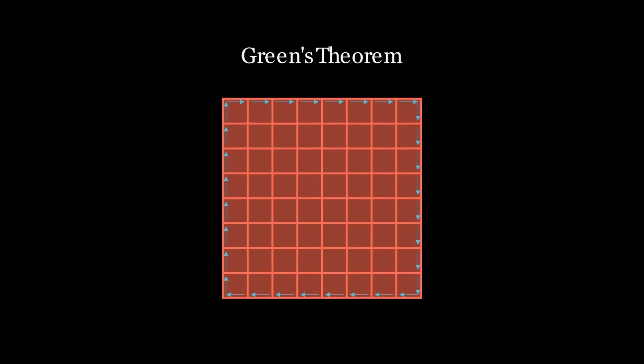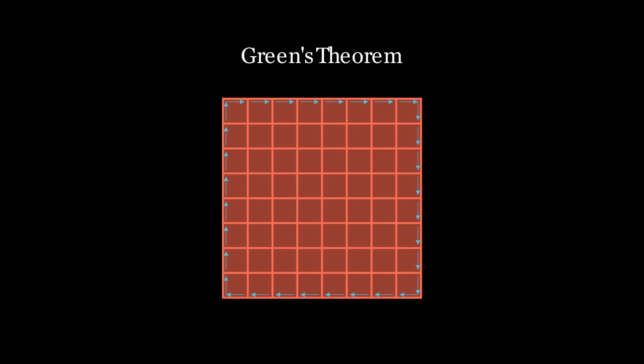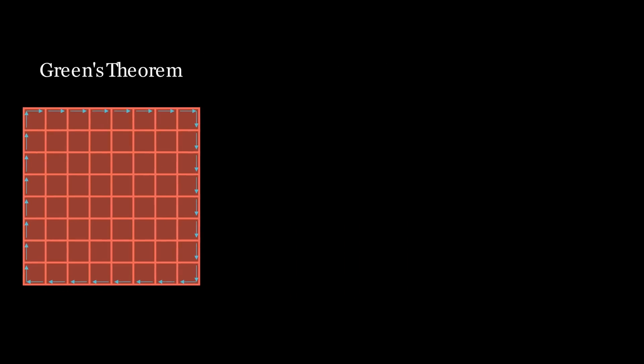This is called Green's theorem. But essentially, what we have done is just upscale the fundamental theorem of calculus to two dimensions and using curl instead of a derivative. This is written in mathematical notation like this. The left side represents the line integral, or boundary, of the region A, which is equal to the right side, which represents the area of the region. If you want to learn more about the actual math behind it, there are some great resources I've linked down in the description, which I highly recommend checking out.